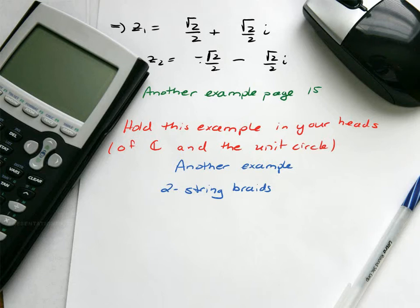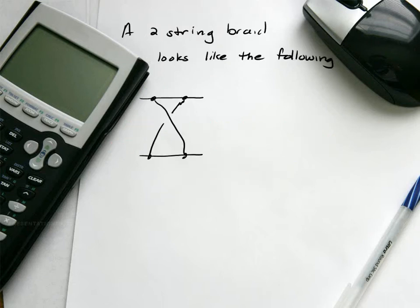These are objects called two-string braids or N-string braids. You can imagine N of these strings hanging there. What they look like is strings hanging from a rod, like shower curtain rings, just hanging down. But the only caveat is they're also hooked at the bottom by some hooks as well.